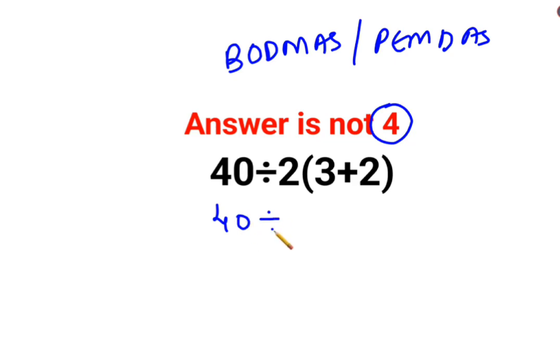So we will keep the rest as it is. And there is no sign between 2 and the bracket means it is multiplication. Now first we will do the bracket, which is 3 plus 2, which is 5.